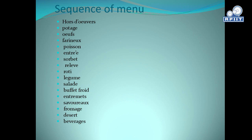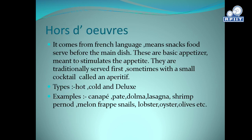Hors d'oeuvres. It comes from French and means snack food. Served before the main dish, these are basic appetizers meant to stimulate the appetite. They are traditionally served first, sometimes with a small cocktail called an apéritif. Types: hot, cold, and delicacies. Examples include canapés, pâté, dolma, lasagna, shrimps, melon, frappé, snail, lobster, oyster, olives, etc.